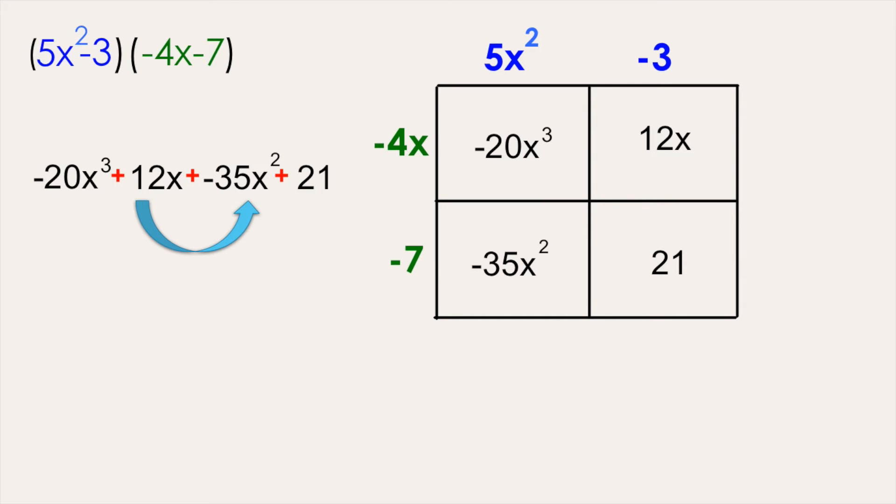So these two terms should be switched, and negative 35x squared should come before the 12x to write this polynomial in standard form. Negative 20x cubed should remain in the front, and 21 being a constant with no exponent should stay at the end of the polynomial. Remember to bring down your addition symbols between each term.